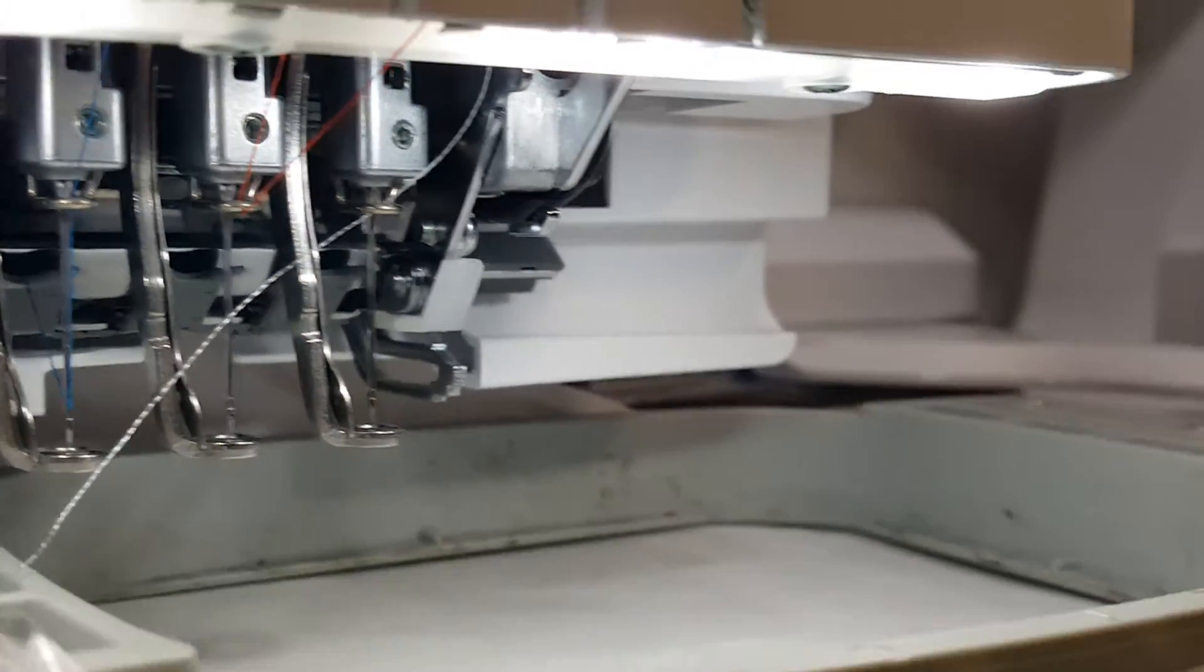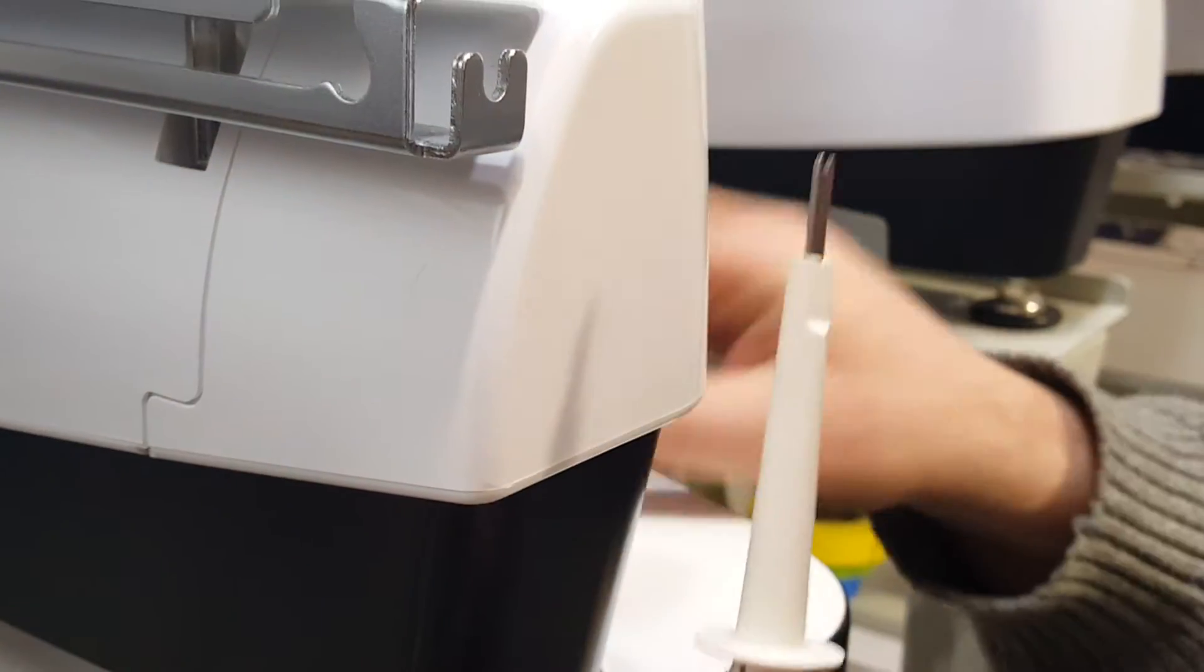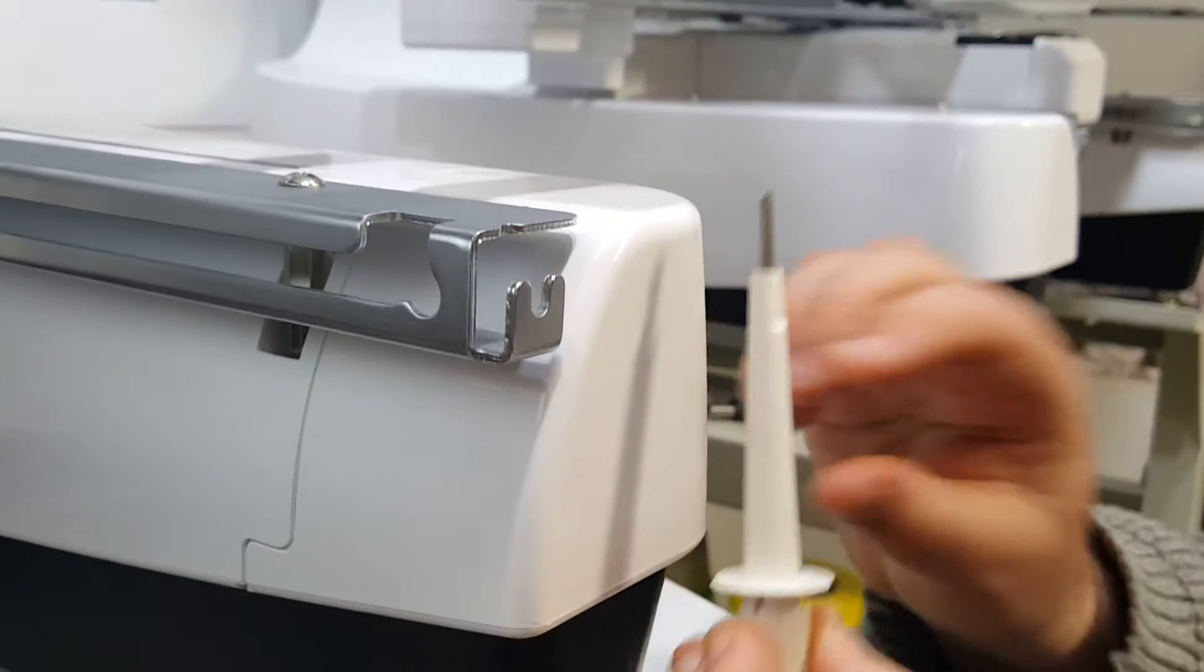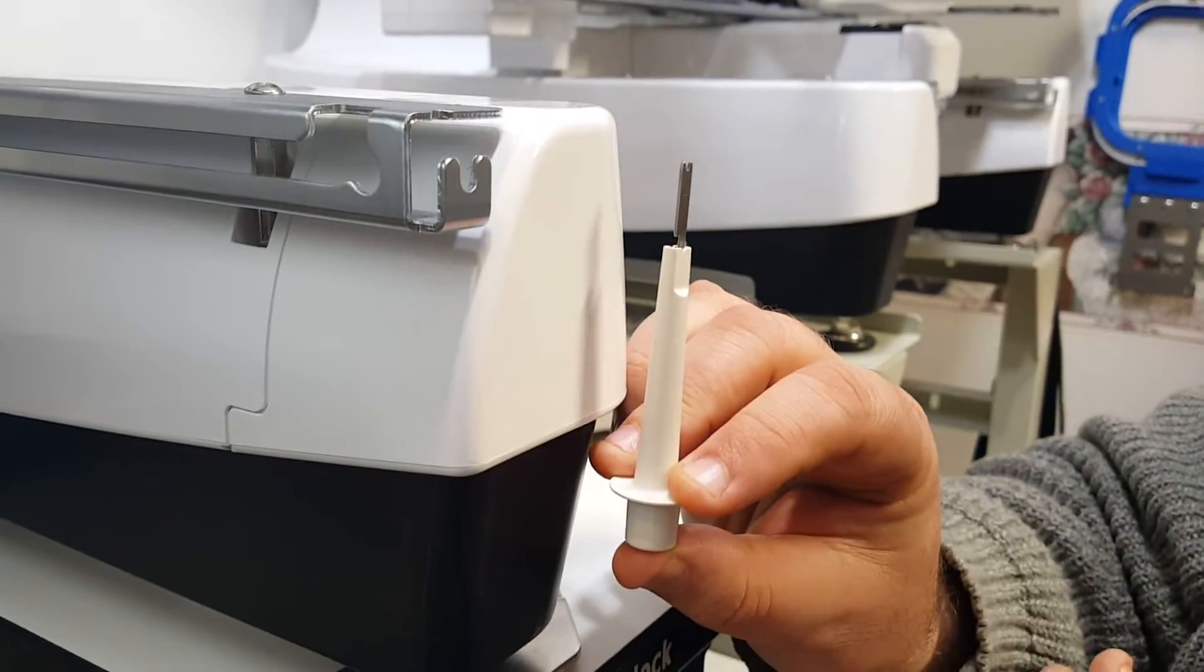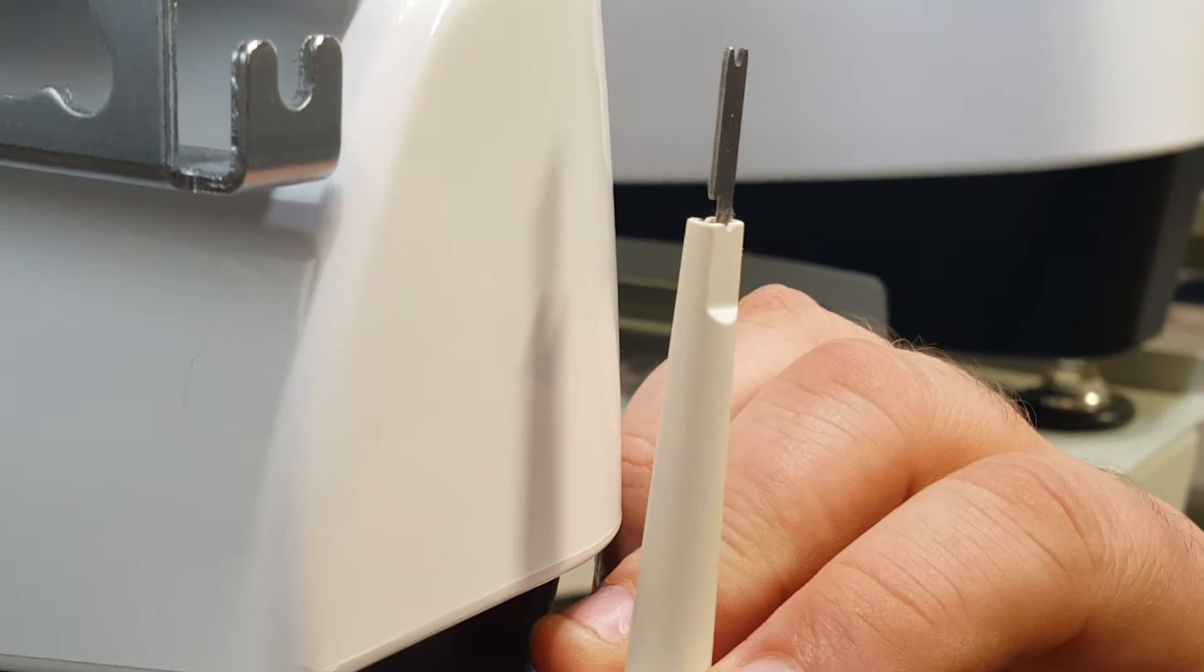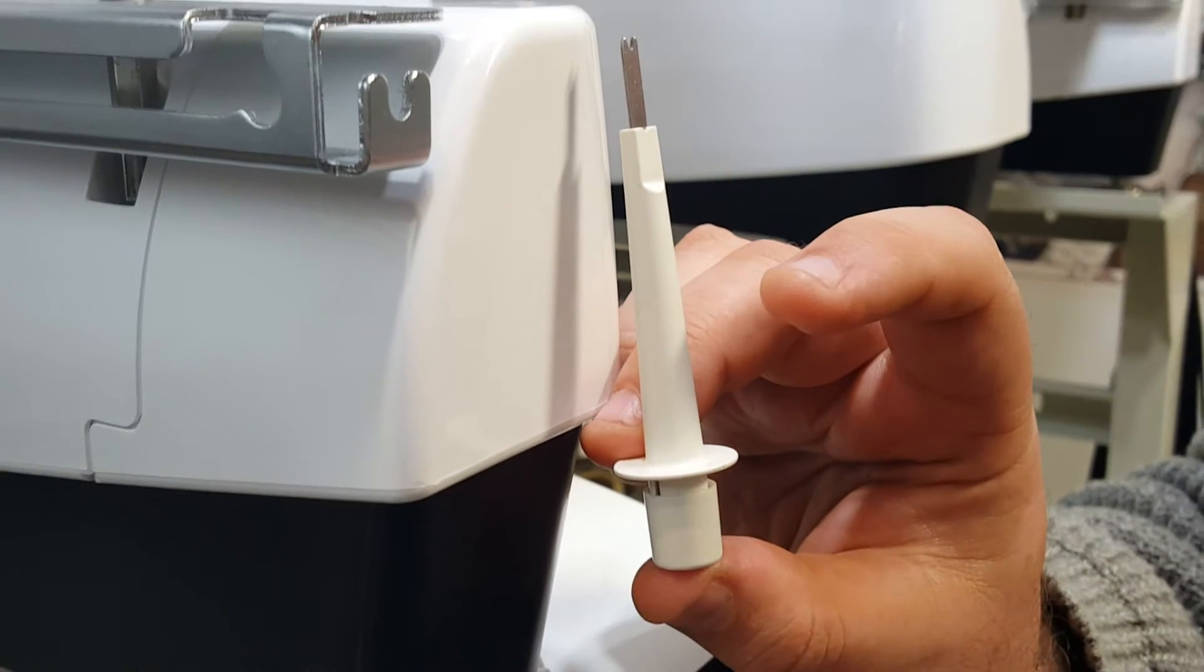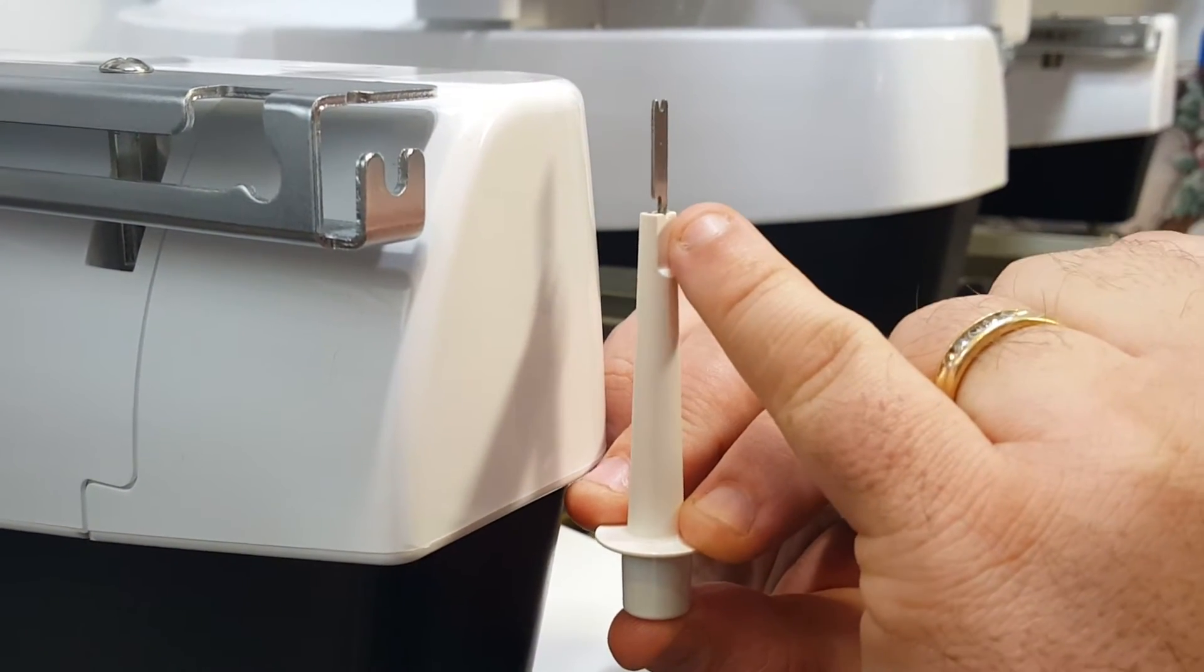Now we're going to take the tool that we used when we threaded our machine. Remember, we used this little part here, we are going to use that again. But if you press up on this, it develops a little notch, a little notch opens up. Again, I release it like what we've always used before. Press up on it and that opens up this little notch area.